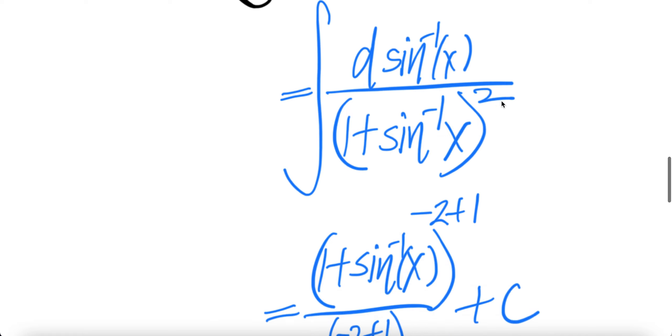Now you can rewrite the integral. This is integral of 1 plus arc sine x whole thing to the power of negative 2.